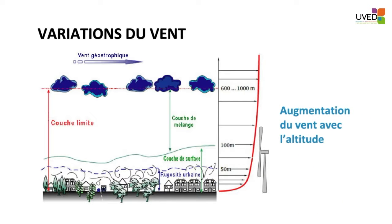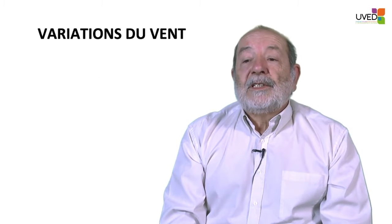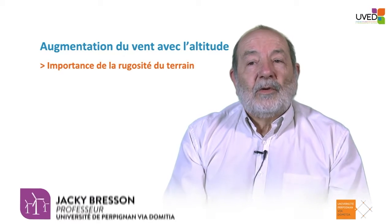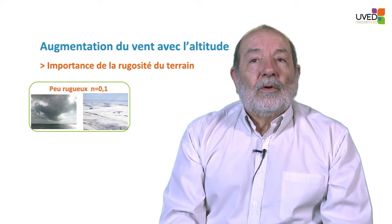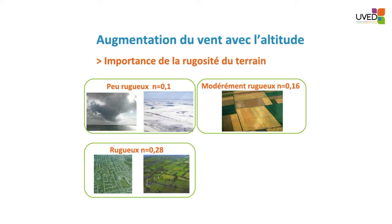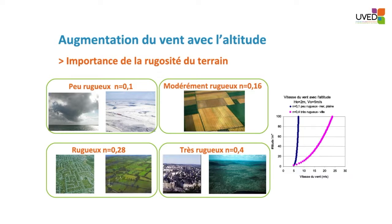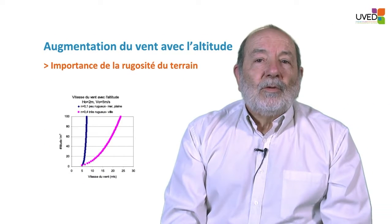Now we look at wind variations. Wind velocity equals zero above ground, and as we go up in altitude the velocity remains constant. In the boundary layer, wind is influenced by asperities on the ground, also called rugosities. There is a simple law providing velocity V at altitude H using the rugosity index N. For flat land, N equals zero; in a plain, N is 0.16; in a moderately rough area such as forest or town, the index increases up to 0.4.